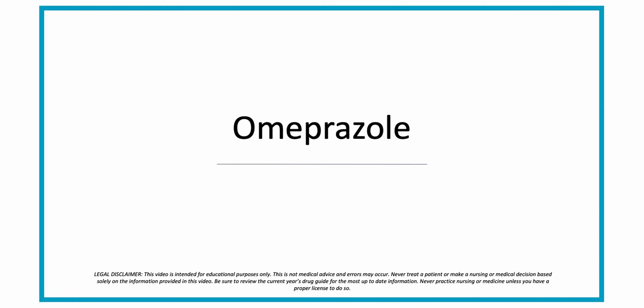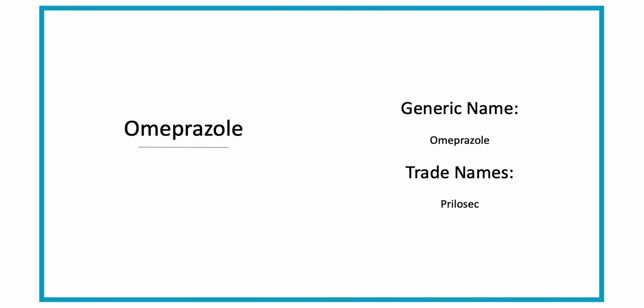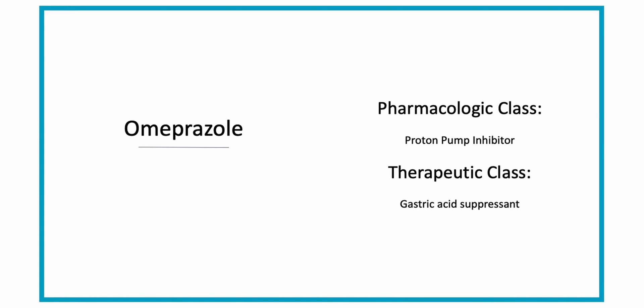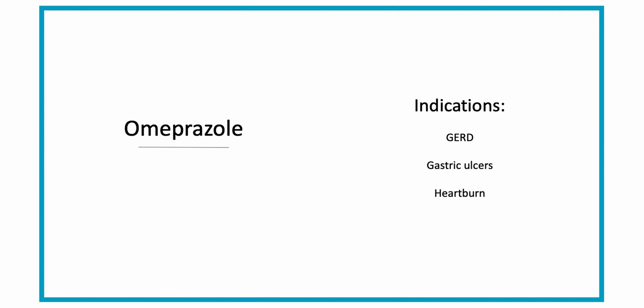Now let's talk about Omeprazole. The generic name is Omeprazole and the trade name is Prilosec. The pharmacologic class is a proton pump inhibitor and the therapeutic class is a gastric acid suppressant. The indications of Omeprazole are that it's used to treat GERD or gastroesophageal reflux disease, gastric ulcers, and heartburn.